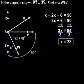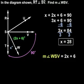Now remember that the problem is asking us to find the measure of angle WSV, which measures 2x plus 6 degrees.